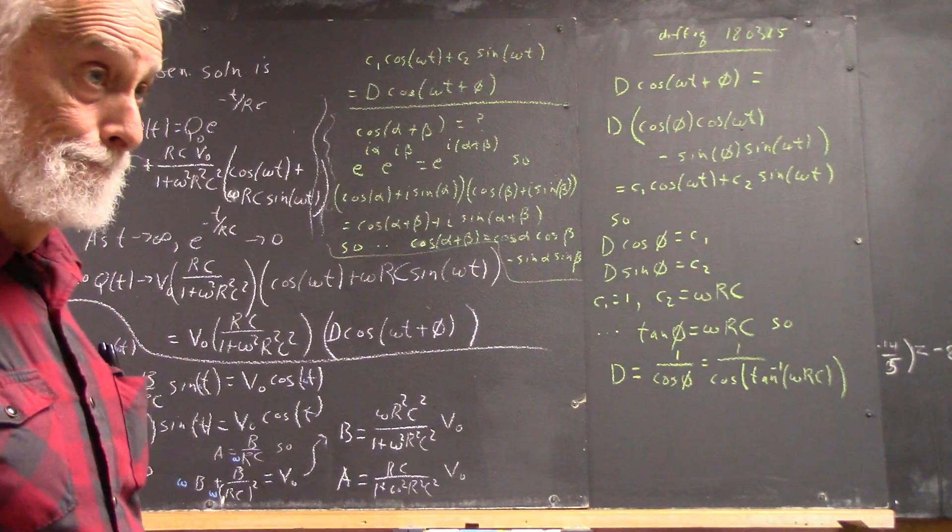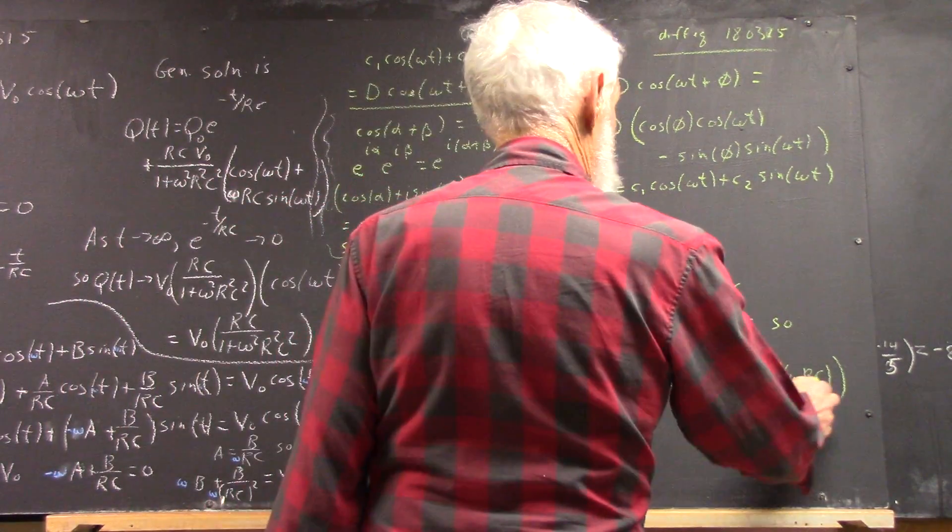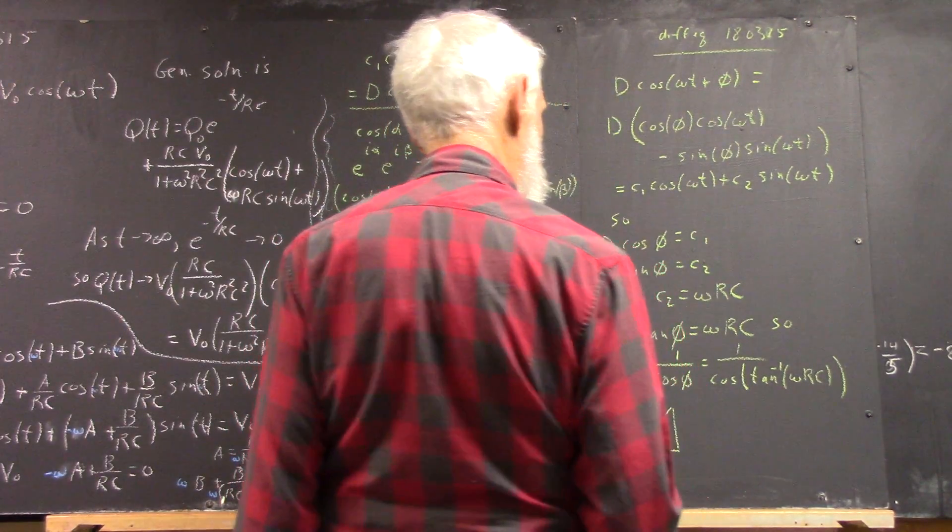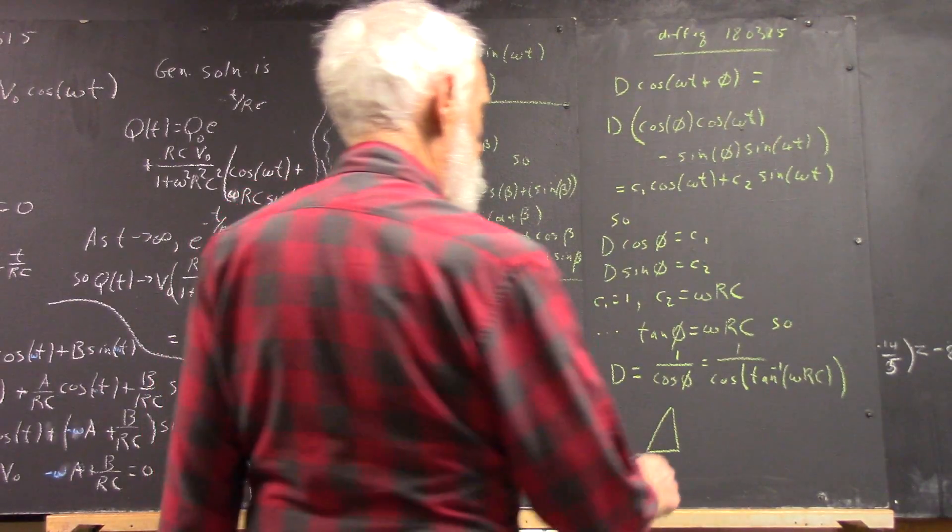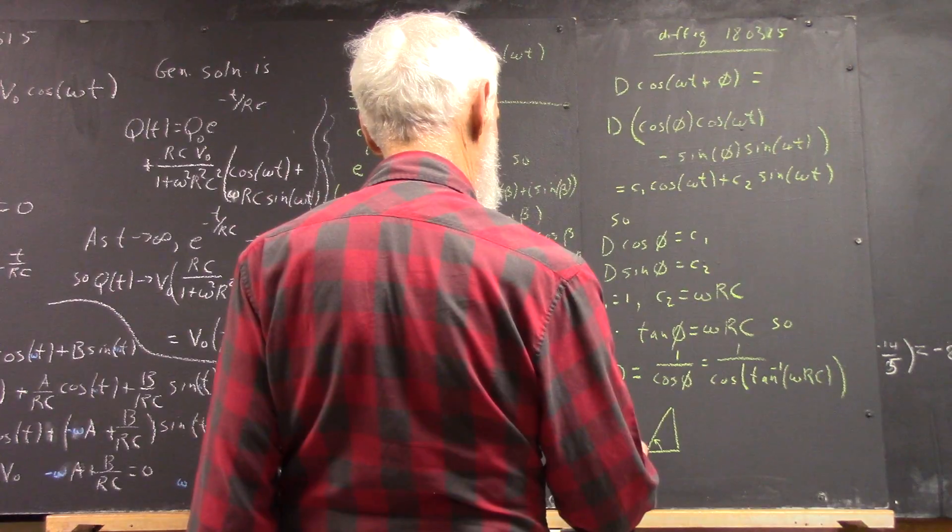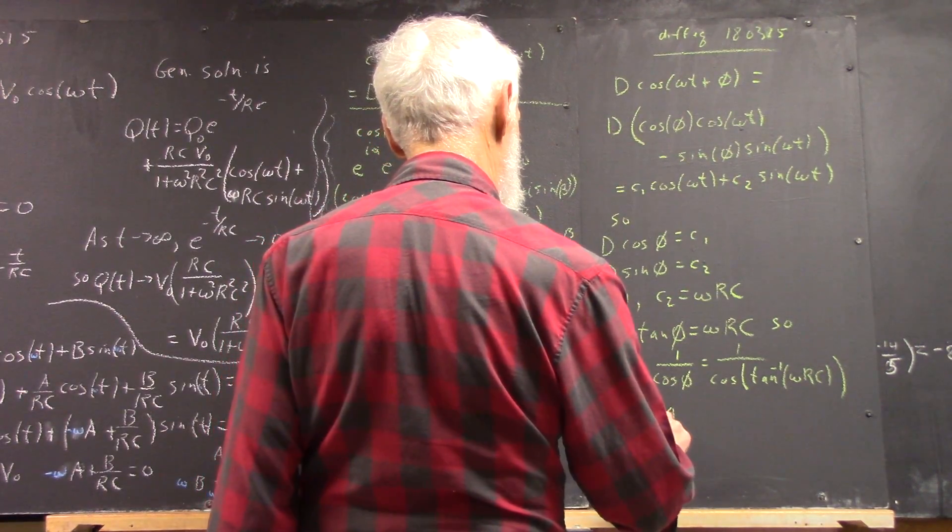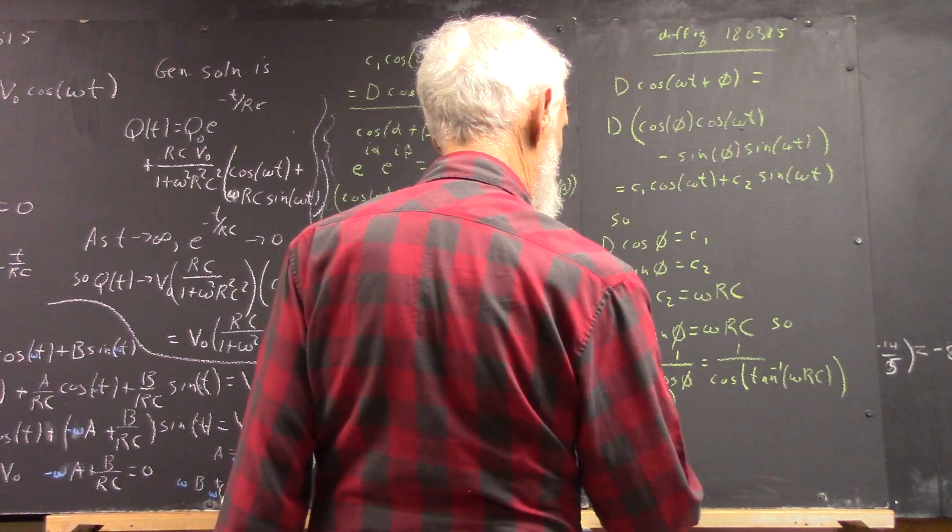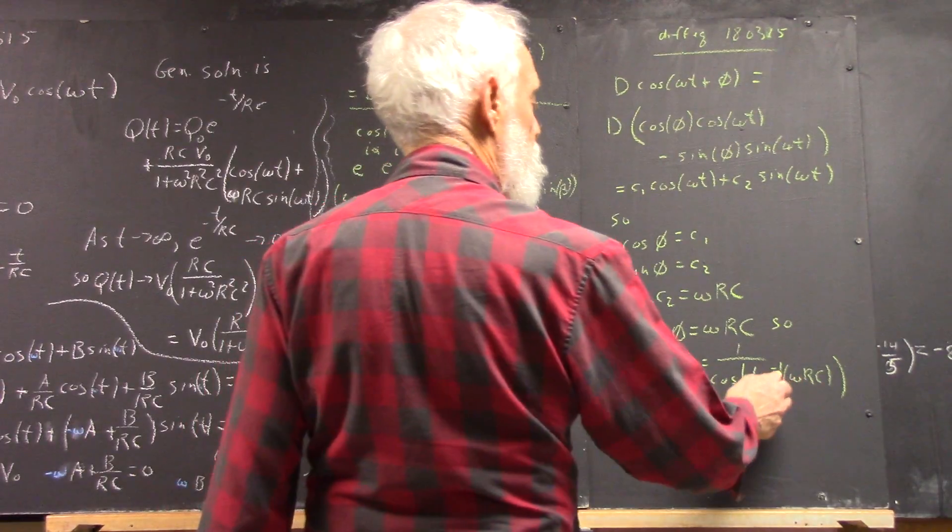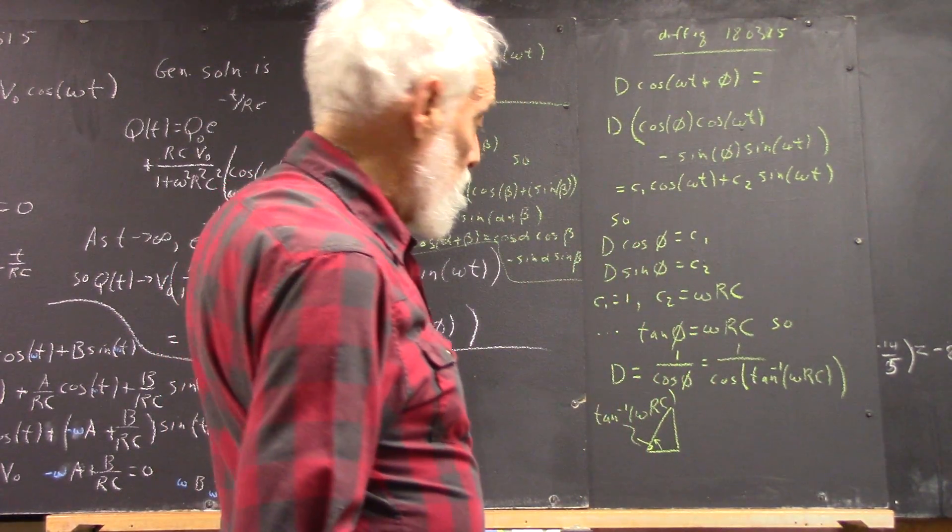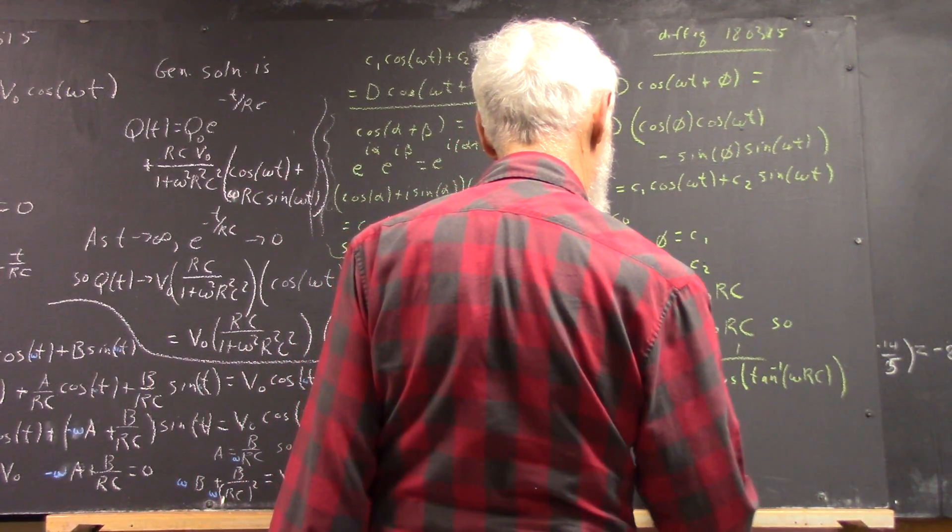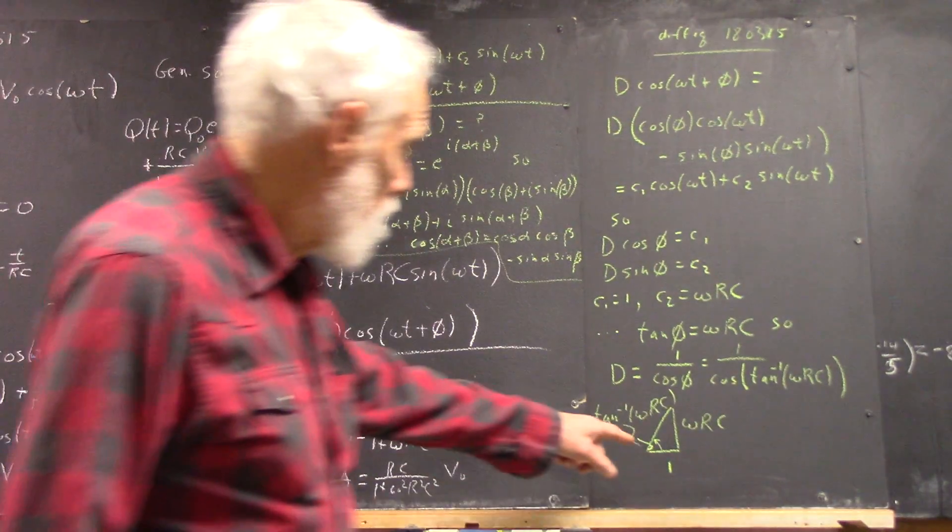What's the arctangent of omega RC? It's the angle of this triangle for which the tangent is omega RC. Tangent's the opposite side over the adjacent side, so that means you can have omega RC here and 1 here. So what's the cosine of that angle?